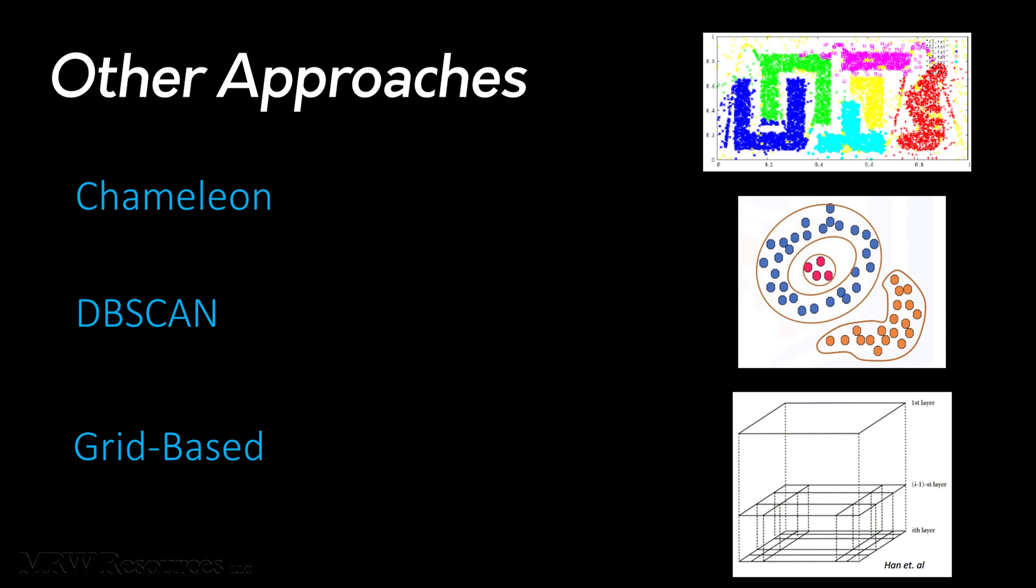Clusters don't always end up with spherical shapes. A Chameleon approach to clustering explores the dynamic modeling of the neighborhood. We can use different types of density functions to identify clusters and their boundaries, and this can counteract the disadvantage of some of the more common hierarchical approaches.